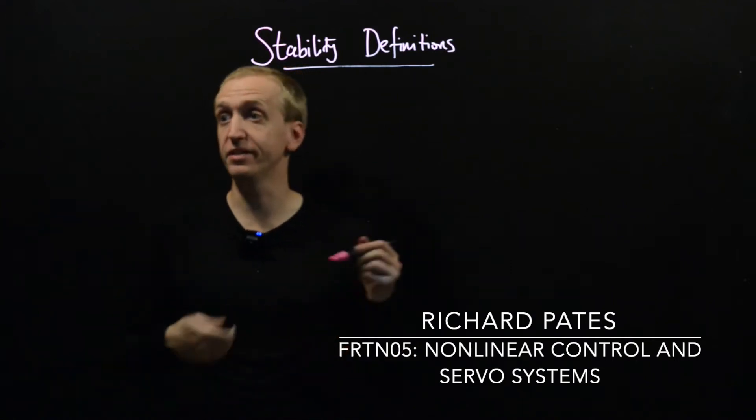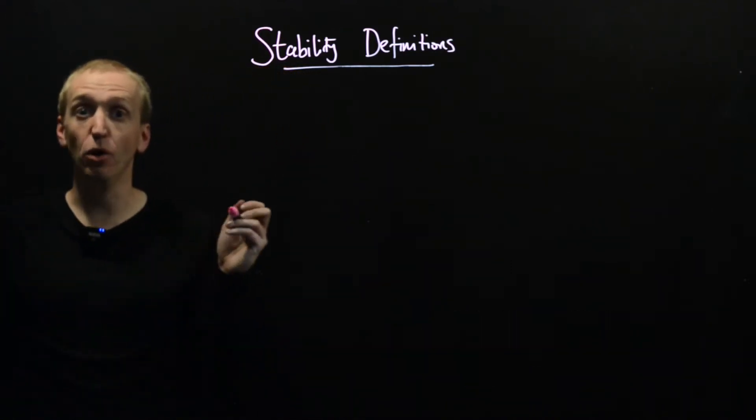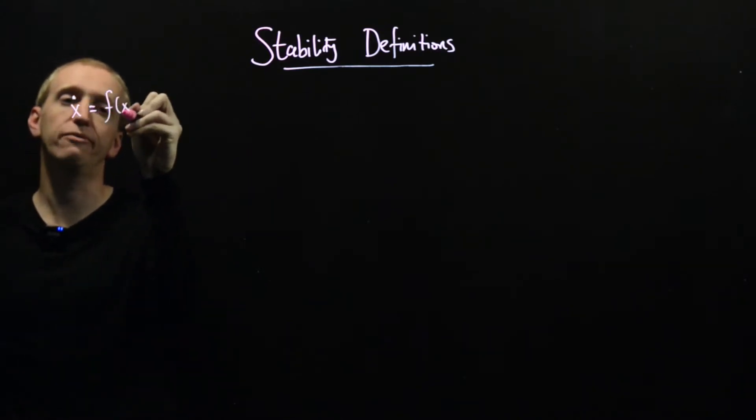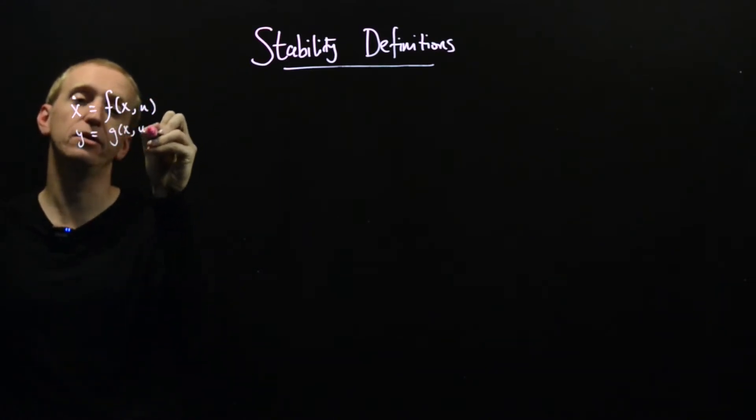What I mean by this is if we're given one of our nonlinear systems in standard form, so we have a system x dot equals f of x u and y equals g of x u.